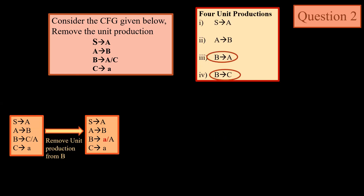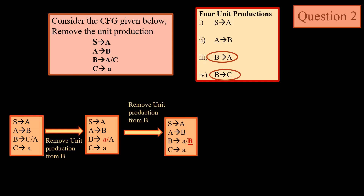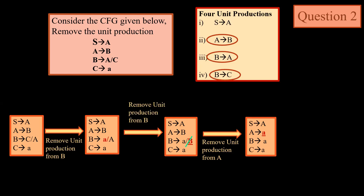Next, the unit production we remove is B → A. When we remove this unit production we get B → a | B. This B → B is a self unit production so we remove it directly. Next we move to the third unit production removal, which is A → B. We remove this unit production from A and we get A → a. The fourth unit production left is S → A.